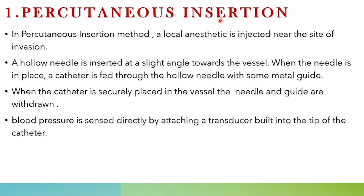The first direct method is percutaneous insertion. In this method, a local anesthetic is injected near the place of insertion. A hollow needle is then inserted at a slight angle towards the vessel. When the needle is in place, a catheter is fed through the hollow needle with a metal guide.